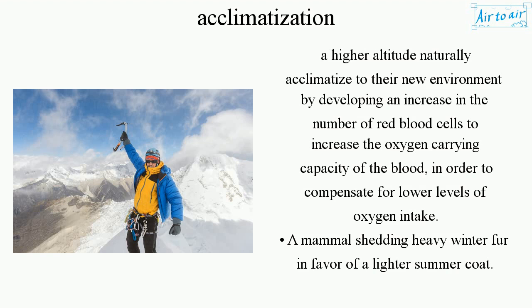Permanent migrants to higher altitudes acclimatize by developing an increase in the number of red blood cells to increase the oxygen-carrying capacity of the blood, in order to compensate for lower levels of oxygen intake. Another example is a mammal shedding heavy winter fur in favor of a lighter summer coat.